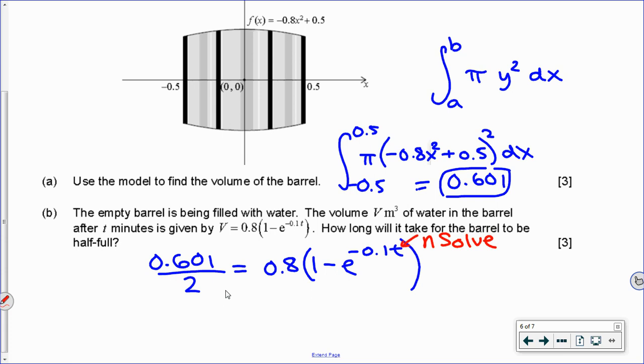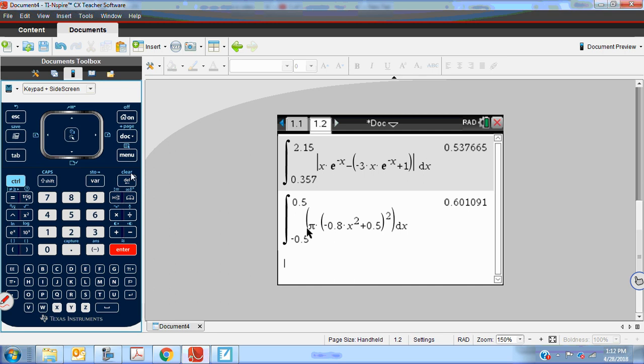I will use the unrounded version of the volume that's already on my calculator screen when I go there. So I'm going to go to menu, algebra, n-solve, numeric solve. And in here, we have to type in the equation that we're dealing with. So I'm going to take my answer from previous.